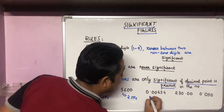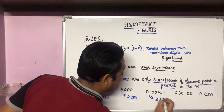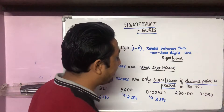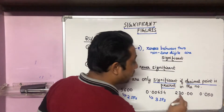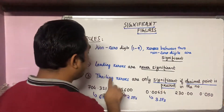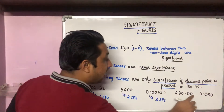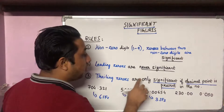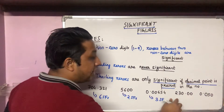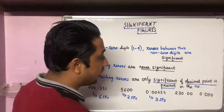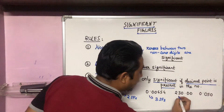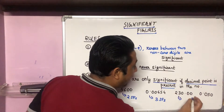0.00230 — here two and three are significant. Because there is a decimal point present in the number, the trailing zeros will also be regarded as significant. Trailing zeros are only significant if a decimal point is present. So two, three, and the trailing zero are all significant — we have one, two, three, four, five significant figures.